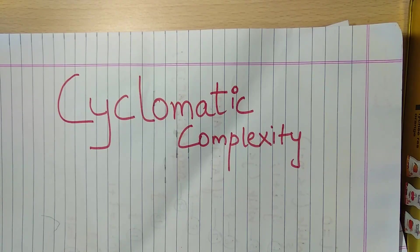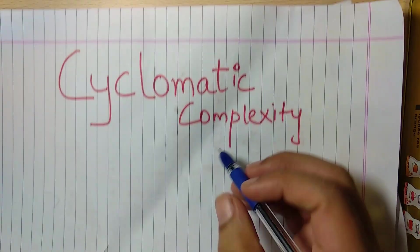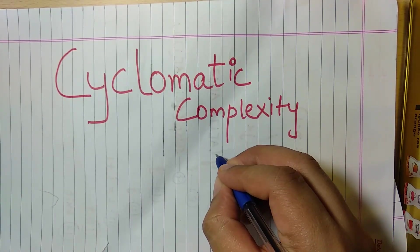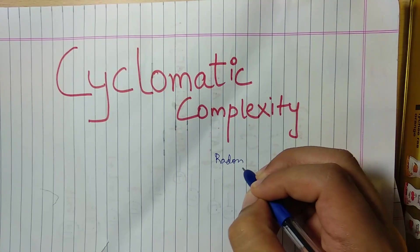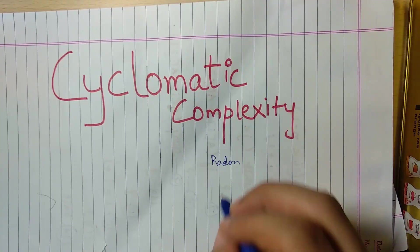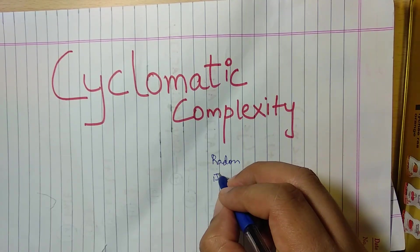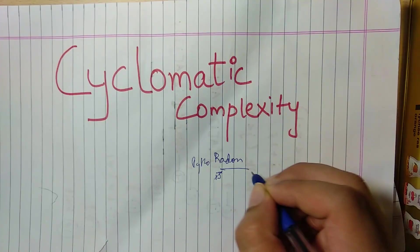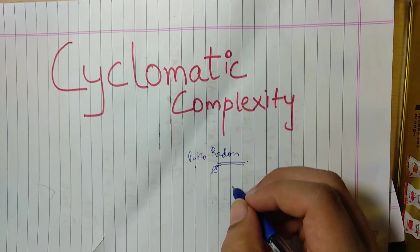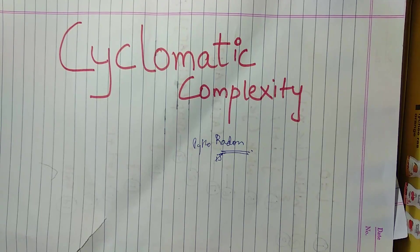We simply form a control flow graph of the program to manually calculate cyclomatic complexity. There are other software tools — for Python it is Radon. For other languages there are other tools. For Java I think it is iJava or something like that — I don't remember. But for Python I have used Radon. So this lecture will tell you about how to manually calculate cyclomatic complexity in a source code. So let's consider a source code.